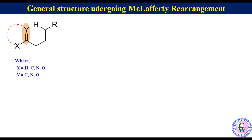This is a functional group, and the carbon atoms in the chain attached to it can be labeled as alpha, beta, and gamma. The gamma hydrogen is very essential for McLafferty rearrangement.